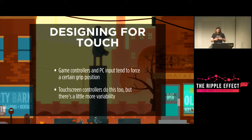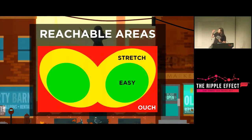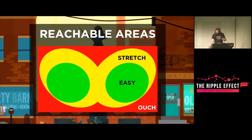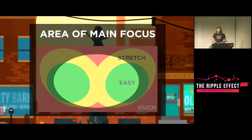A touchscreen will also force a gripping position, but with more variability. There's an area of easy reach in the middle of the screen — that circle is much smaller than the stretch zone. Holding a phone in your hands, I can very easily reach the middle parts of the screen; with a bit of a stretch I can reach further; and it actually becomes physically painful to extend my reach to the corners or into the very middle of the screen.